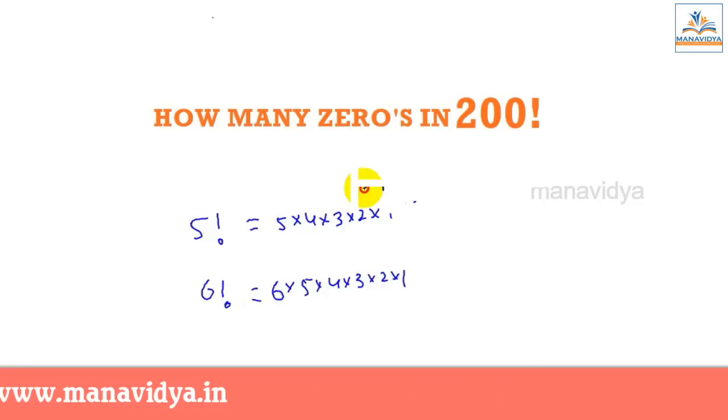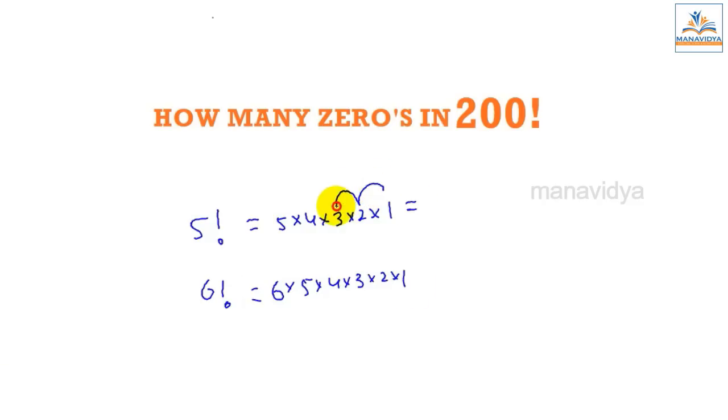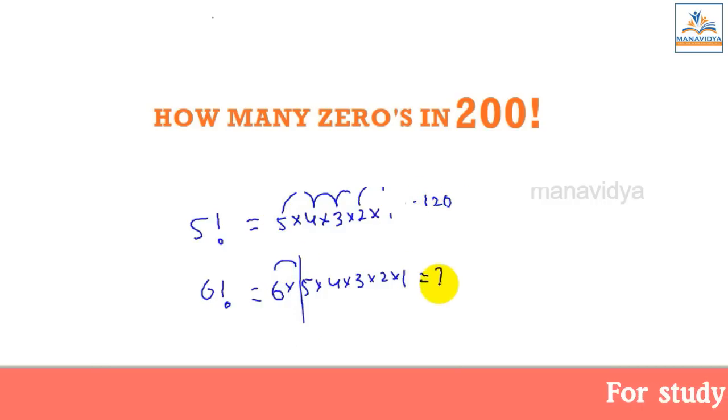This value is 2 into 1 is 2. 2 into 3 is 6. 6 into 4 is 24. 24 into 5 is 120. That means 120 into 6 is 720.